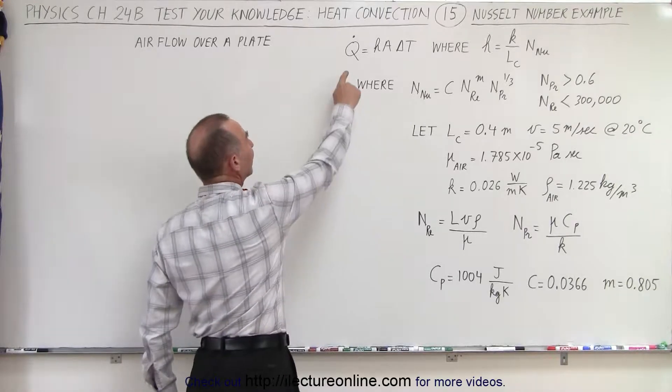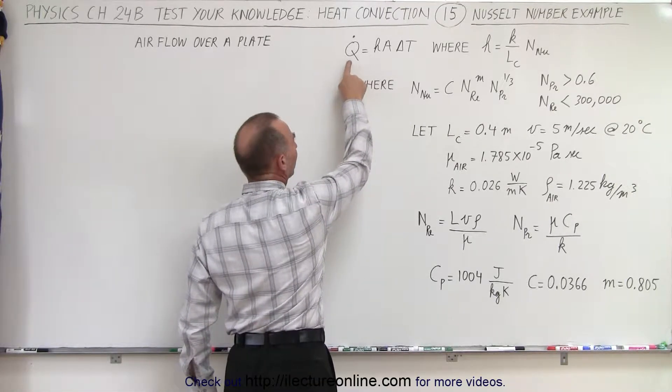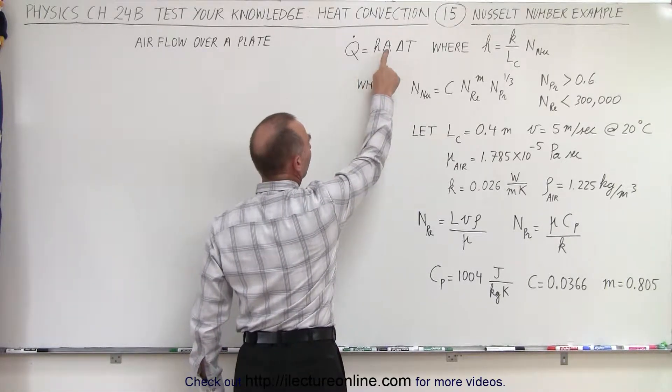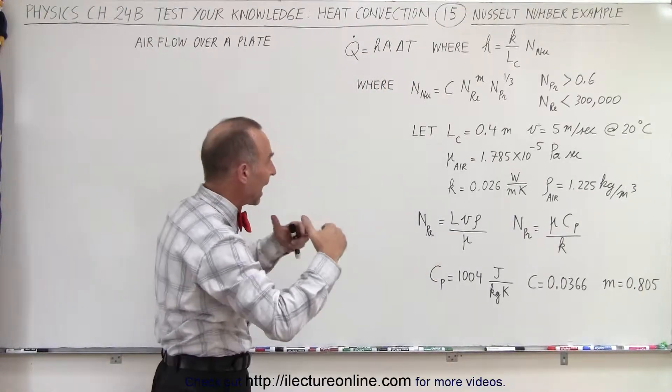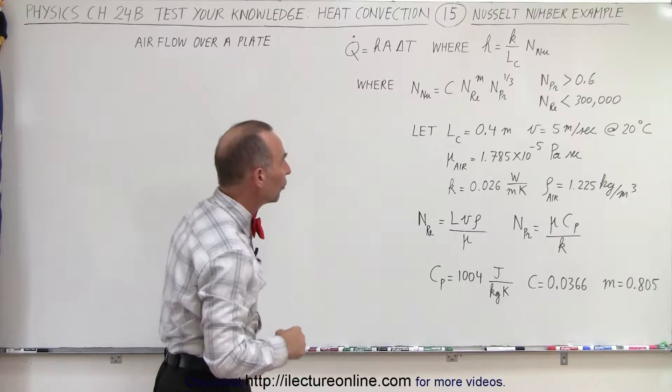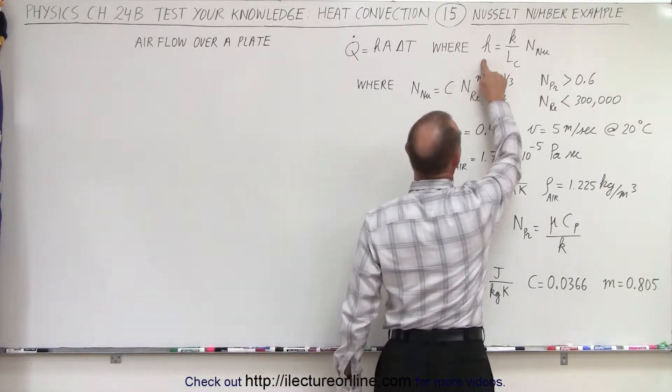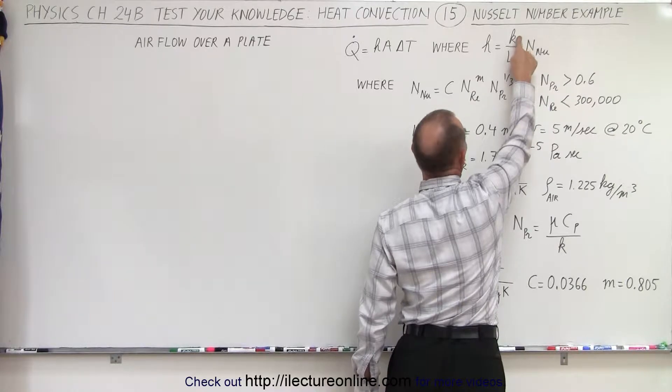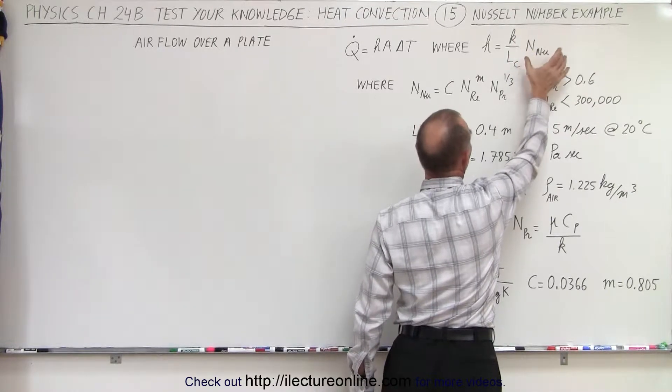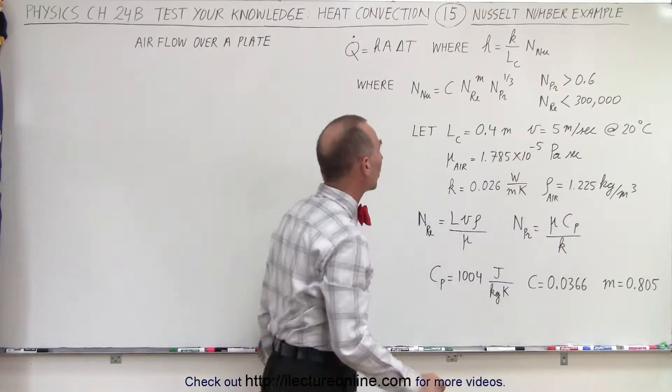So here we're trying to find the heat flow from an object as a function of the transfer coefficient, the surface area, and the difference in the temperature between the object and the ambient air. The transfer coefficient can be calculated as the ratio of the conductivity constant of the fluid divided by the characteristic length times the Nusselt number.